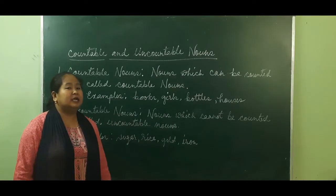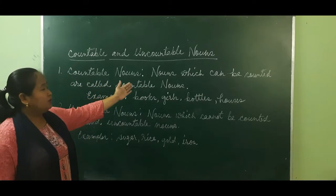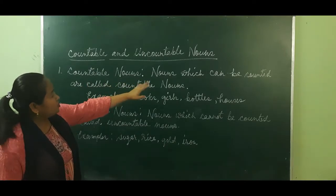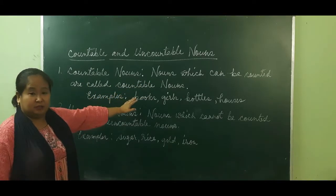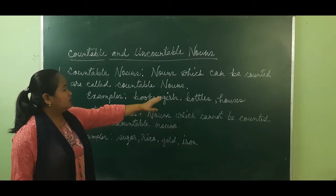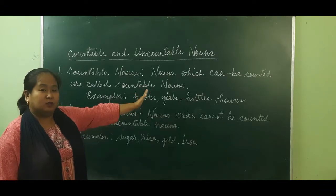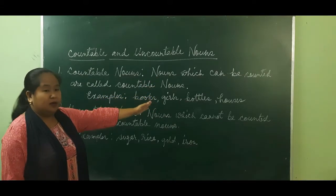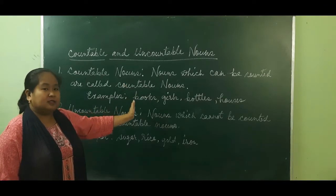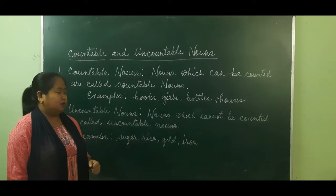Now let us learn countable and uncountable nouns. Countable nouns are nouns which can be counted. For example: books, girls, bottles, houses — we can count one book, two books, three books; one girl, two girls. Things that can be counted are called countable nouns.